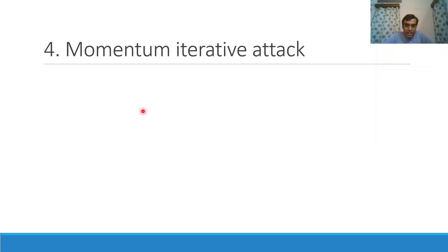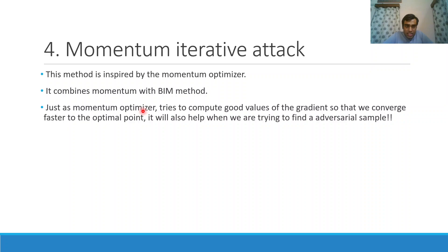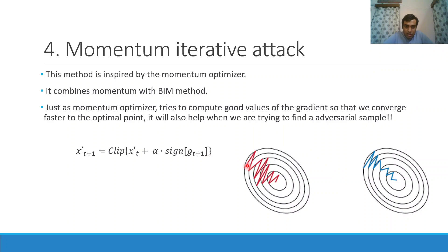Next is the momentum iterative attack which is inspired from the momentum optimizer. The basic method is same as the BIM method but the gradient is calculated more carefully. Just as the momentum optimizer tries to compute good values of the gradient so we converge faster, it also helps when we are trying to find an adversarial sample. The t plus 1th sample will depend on the tth sample and then we will add the gradient. So g t plus 1 will be obtained from the value of the past gradients also, but the weightage of the past gradients will decay exponentially. This is an example: if we do simple BIM iterations, then the value may converge by taking wild right and left swings. But if we use momentum iterative attack, the convergence may be faster and more smooth and streamlined.